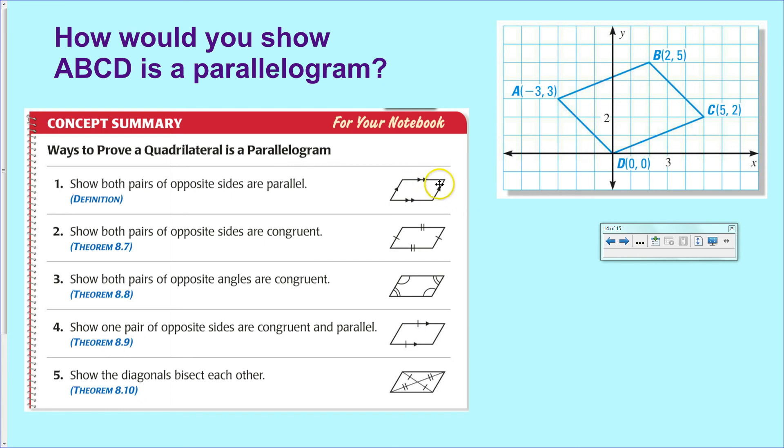You can show that the sides are parallel using the definition. To do that over here, you would have to show that each one of these segments is parallel across the way. That means that you'd have to do the slope formula for each pair of opposing sides and show that the slopes are equal.